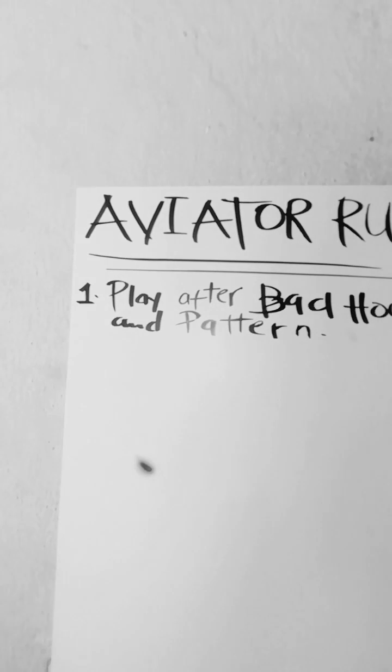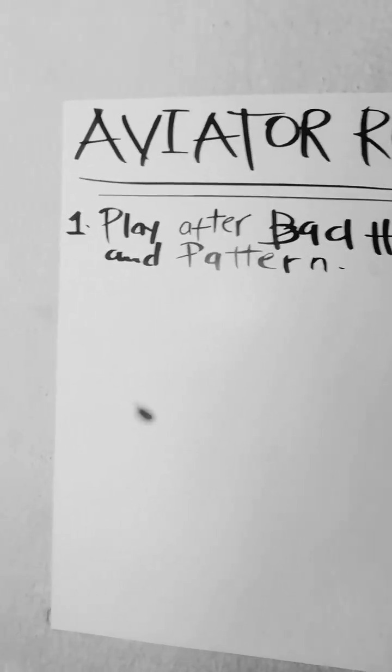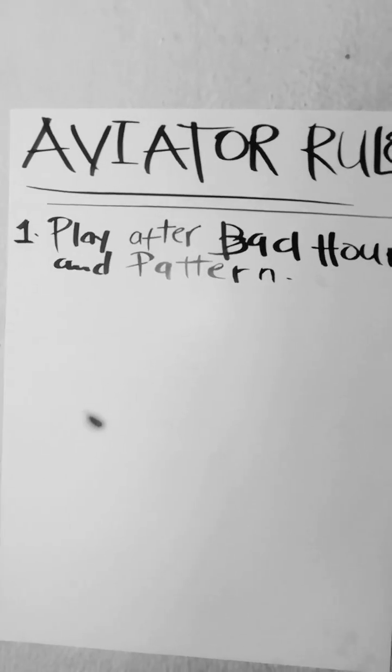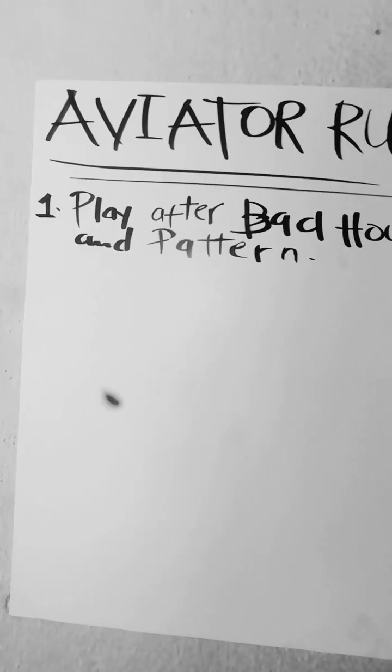I explained what a bad hour is, which is five or more blues in a row. A pattern is the frequency of blues that appears before you get a different color.